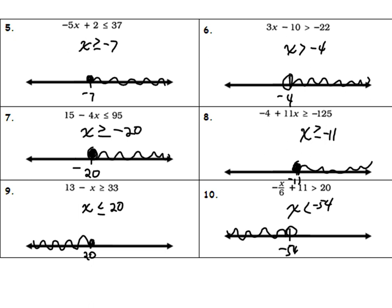So here are your answers for 5 through 10. Number 5, x is greater than or equal to negative 7. 6, x is greater than or equal to negative 4. 7, x is greater than or equal to negative 20. 8, x is greater than or equal to negative 11. 9, x is less than 20. And 10, x is less than negative 54.